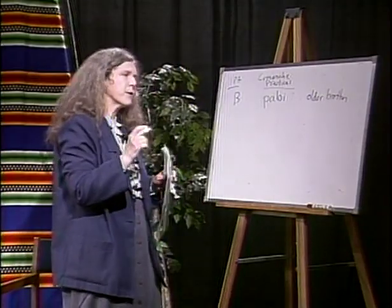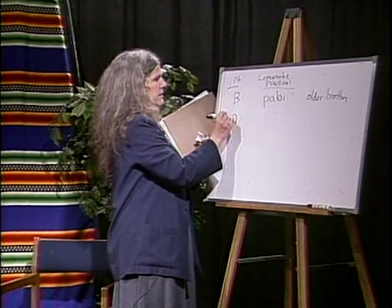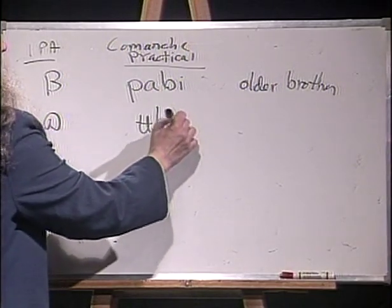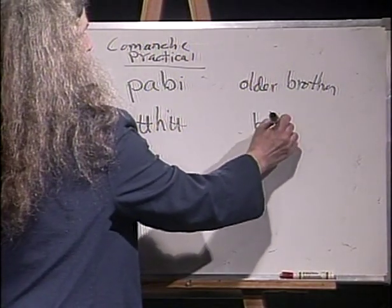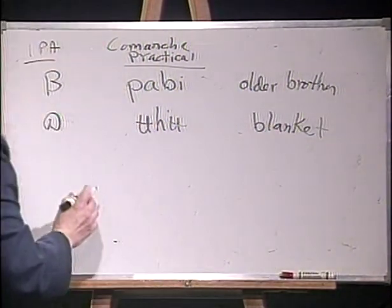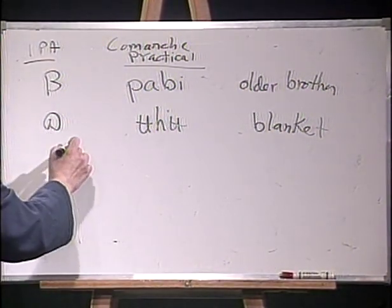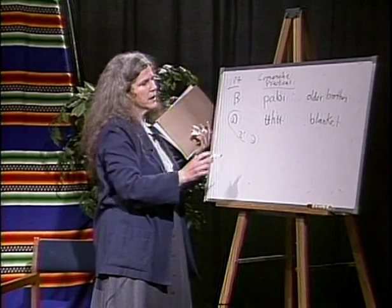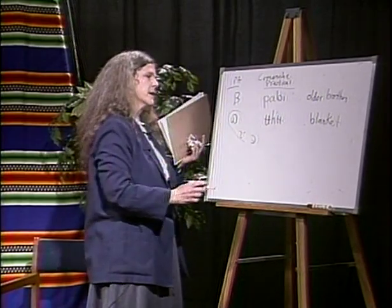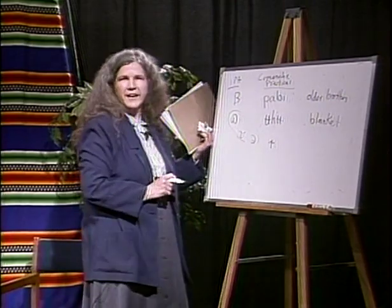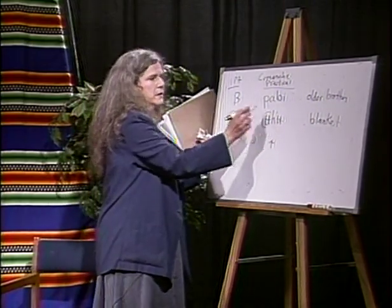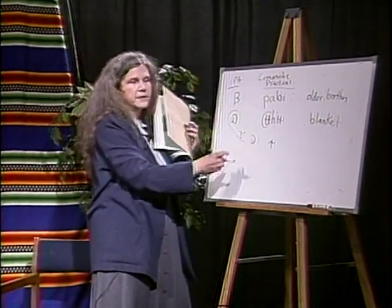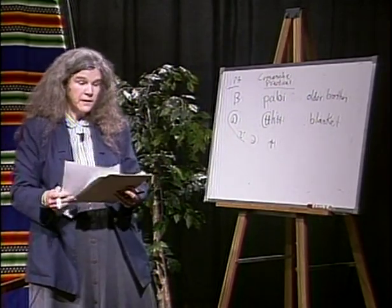Comanche also has an interesting vowel pronounced something like the U in 'book'. A word in Comanche meaning 'blanket' uses this vowel, and we chose to use a U with a line through it for that vowel. That was a tough one, because symbols that linguists would use would be the IPA symbol or the Americanist symbol, maybe even a schwa. None of those are ordinary everyday symbols. People have also used an I with a line through it, but we decided that looked too much like a T, so we settled on a U with a line through it as a practical, relatively user-friendly alternative.